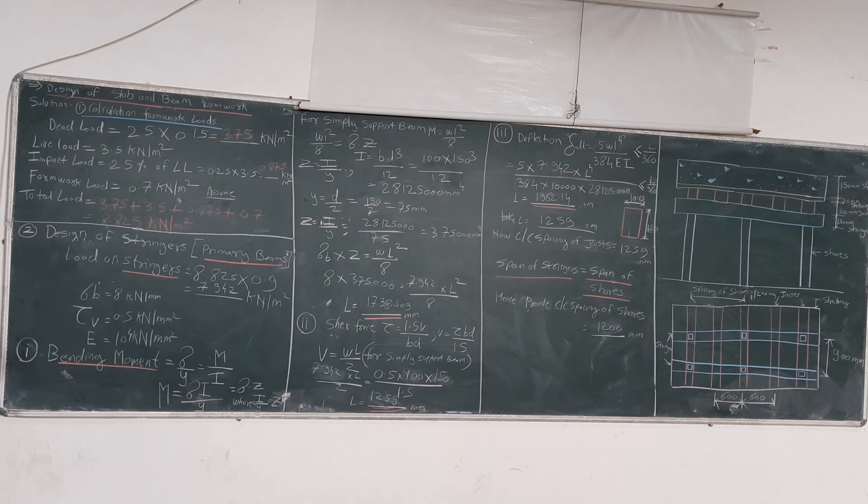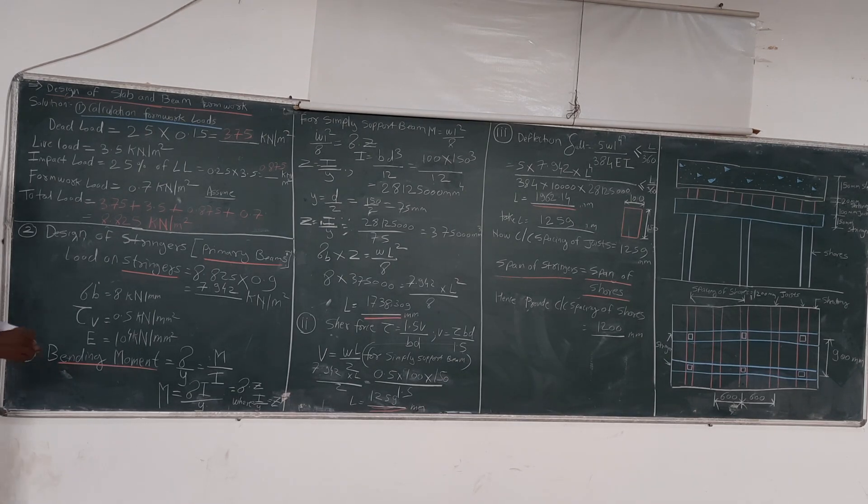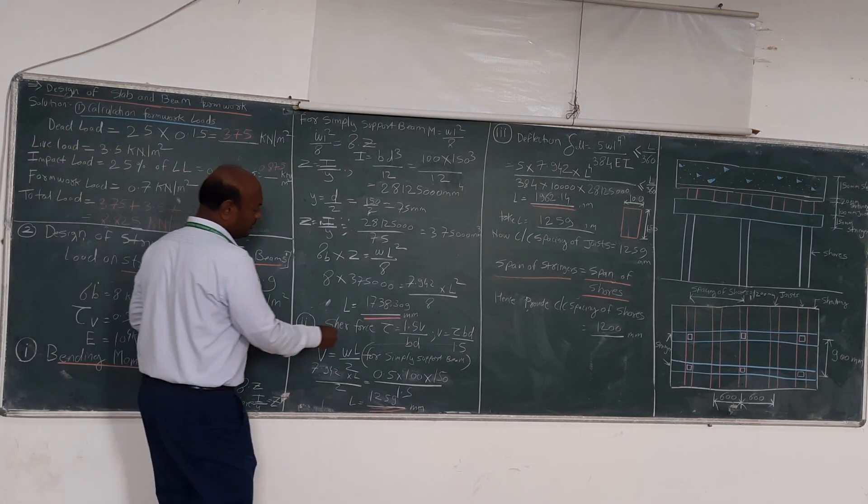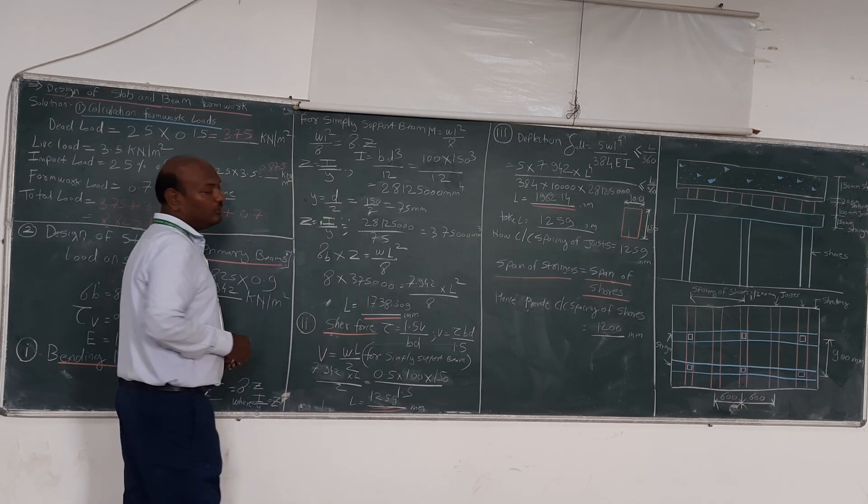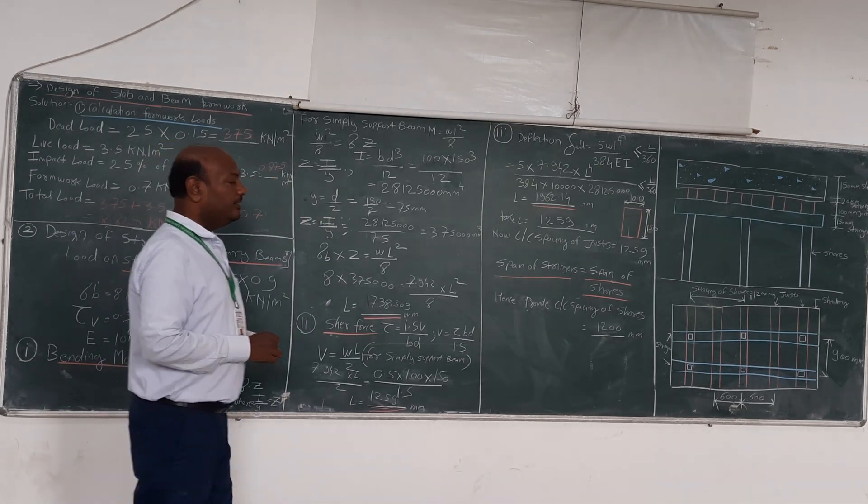The second formula which we will be using is the shear formula, that is tau is equal to 1.5 V divided by bd.